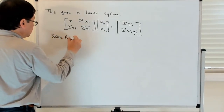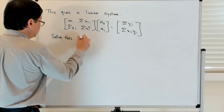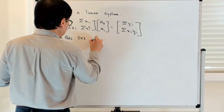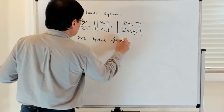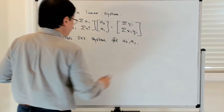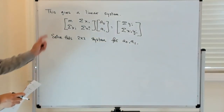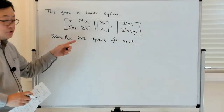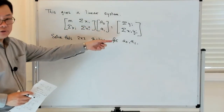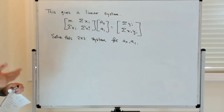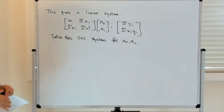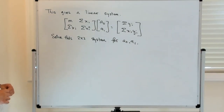This gives a linear system — a 2-by-2 system of the form: [m, sum of xi; sum of xi, sum of xi squared] times [a0, a1] equals [sum of yi, sum of xi yi]. So I can solve this 2-by-2 system for a0 and a1. The next thing we're going to do is talk about how you can get equations like this more generally for problems where you're trying to minimize the square of the two norm of the error.